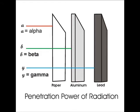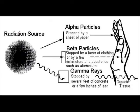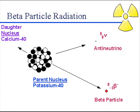Alpha particles can travel only a few centimeters in air. They can be absorbed by tissue paper or the outer layers of human skin, so are not generally dangerous to life unless the source is ingested or inhaled.